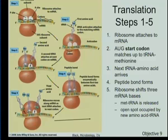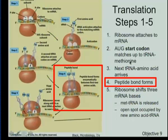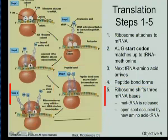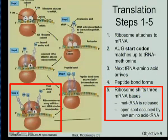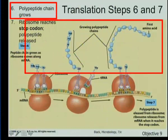The ribosome moves down and reads the next three bases, and another transfer RNA comes in. Between the methionine placed first and the new amino acid placed second, a peptide bond forms. We now have amino acid number one and amino acid number two bonded together - we've formed a dipeptide. As the ribosome moves down, there is also the exit site where the transfer RNA leaves. The new transfer RNA of the next codon comes into the A site; we form another peptide bond and end up forming a tripeptide.